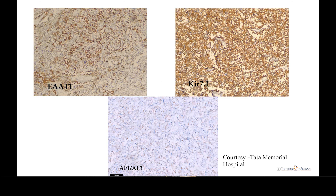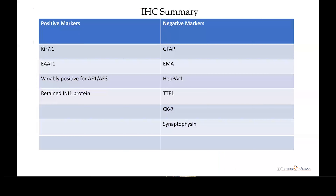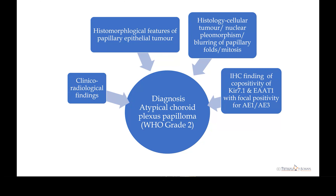Finally, we got three markers positive: EAT1, KIR7.1, and focal positivity for pancytokeratin. To summarize the IHC: all other markers were negative; the positive markers were EAT1, variable positivity for pancytokeratin, along with retained INI1 protein. The left lateral ventricle space-occupying lesion showed histomorphological features of a papillary epithelial tumor with co-positivity of KIR7.1 and EAT1 with focal pancytokeratin. Though choroid plexus papilloma was considered, the tumor was more cellular with nuclear pleomorphism, blurring of papillary pattern giving a solid appearance, and mitoses — so we rendered this tumor as atypical choroid plexus papilloma, WHO grade 2.